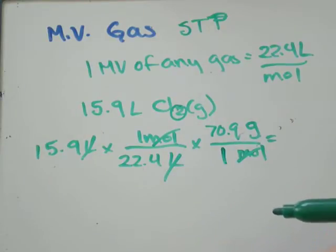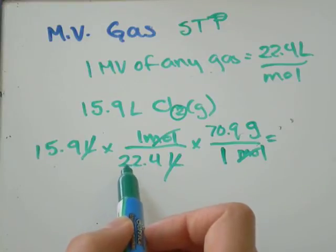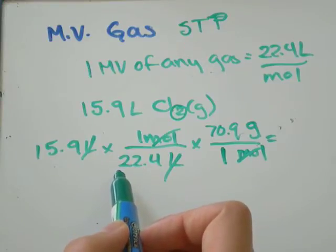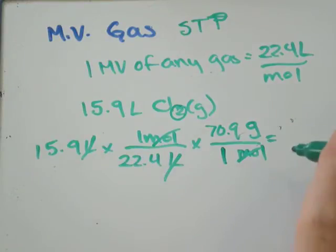And then all my units look like they should cancel out okay. So, I'll go 15.9 divided by 22.4 times 70.9 equals, I get 50.3 grams.